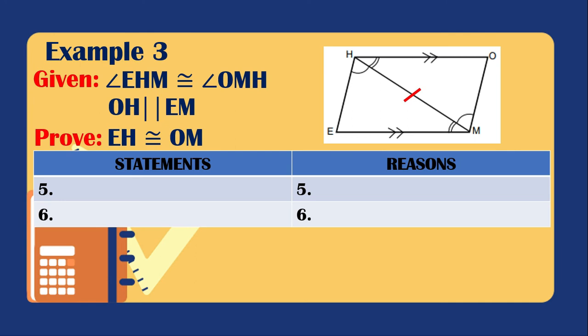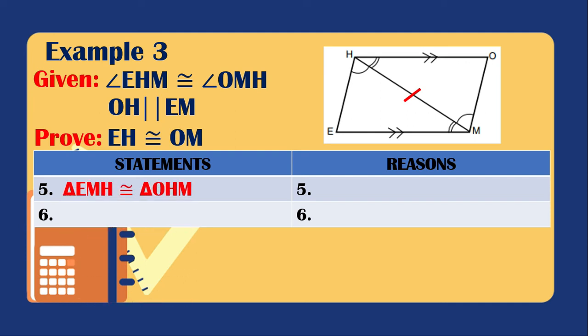For the fifth statement, we can now prove that the two triangles are congruent. Triangle EMH is congruent to triangle OHM because of the ASA postulate. Since the two triangles are congruent, we can prove that EH is congruent to OM because of CPCTC.